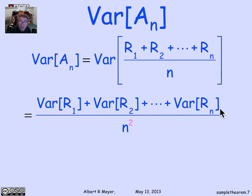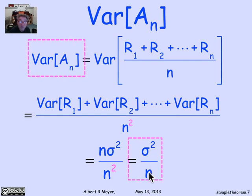And the numerator is the sum of the n variances. Now each variance is sigma squared, and we've got n of them. So we wind up with n sigma squared over n squared, which is, of course, equal to sigma squared over n. And sigma squared is a constant and n is going to infinity. So sure enough, the right hand side goes to 0 as n increases...